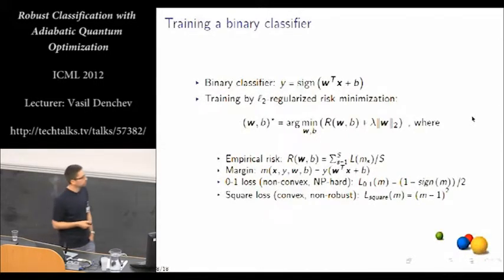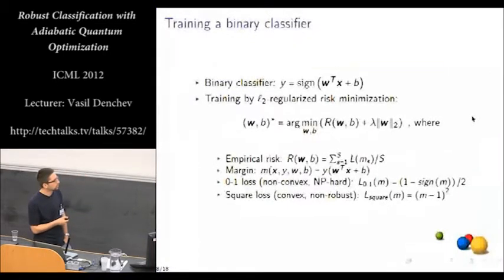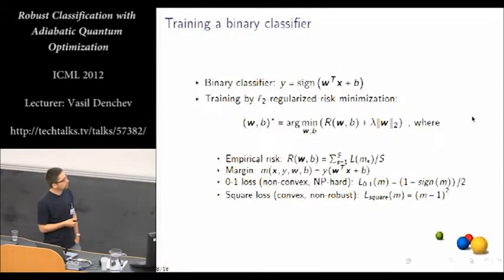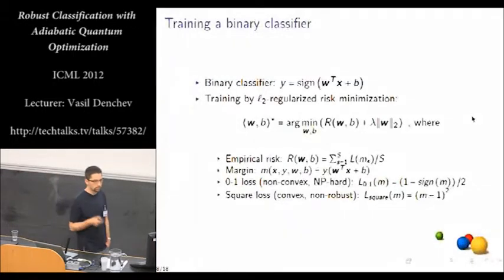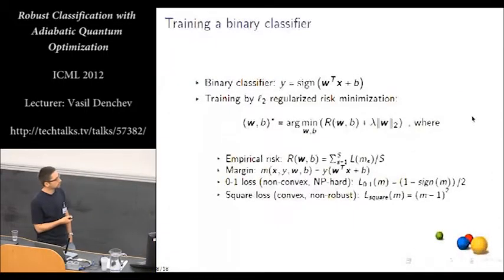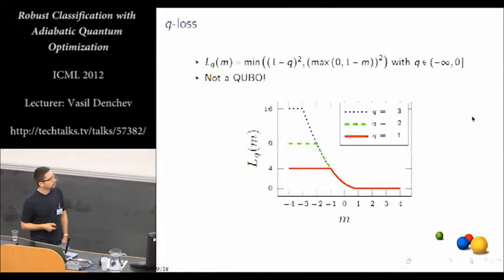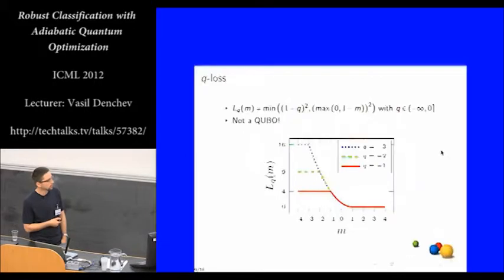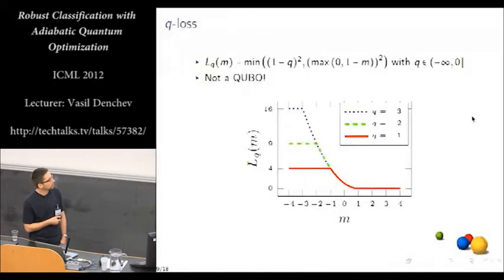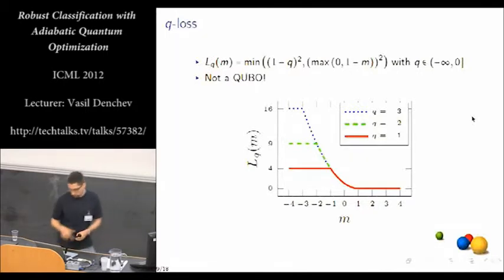The loss functions, we have a lot of choices for loss functions. The most natural one is 0-1 loss. But this is known to be, of course, it's non-convex and would be robust to label noise. But it's also known to be NP-hard. Square loss, on the other hand, is convex. It's an example of a convex relaxation or a surrogate loss that can be used in training. But it's non-robust because of its convexity. The loss function that here we propose, we call it q loss. And it looks like this. So the intuition behind it is that we achieve robustness by cutting off the penalty for large negative margins. And the cutoff is controlled by a hyperparameter q.